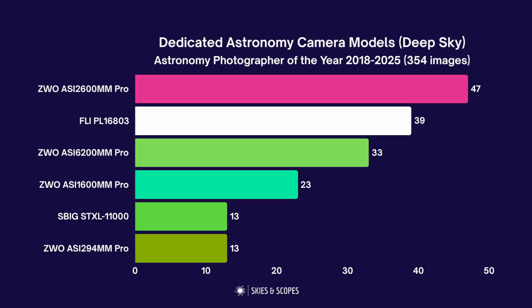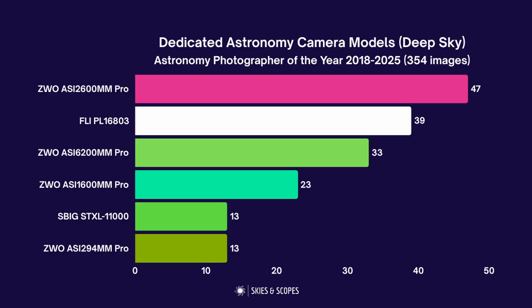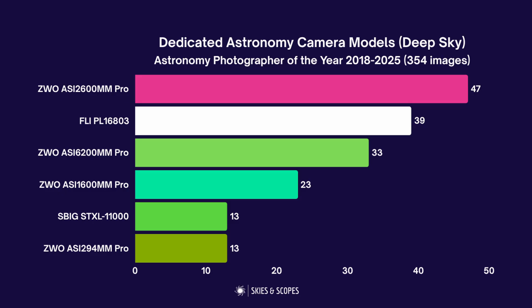Moving on to the models used: the top ones over the full eight years — number one is the ZWO ASI 2600MM Pro. You've got four ZWO models in there plus two others. Second is the 6200MM Pro, which has a confusingly similar name; both are monochrome dedicated astronomy cameras for deep sky. The 6200 is higher resolution and more premium — costs about twice as much. The third ZWO model, the 1600, is discontinued and was superseded by the top model, the 2600 Pro. And lastly the 294MM Pro.